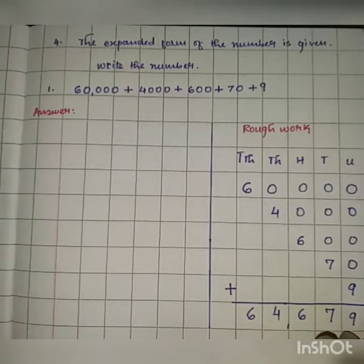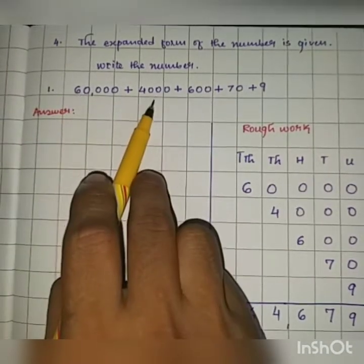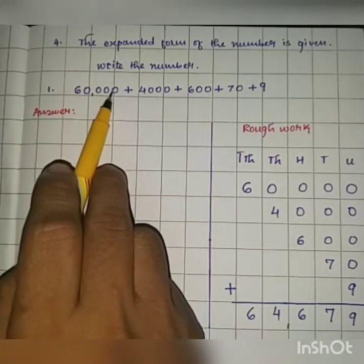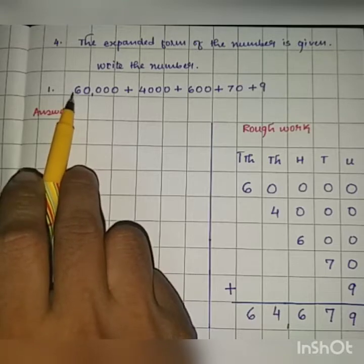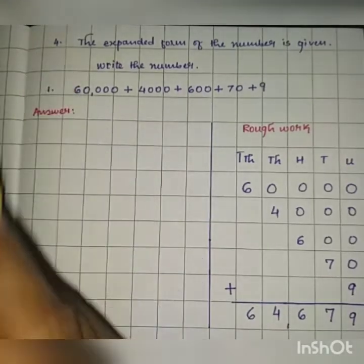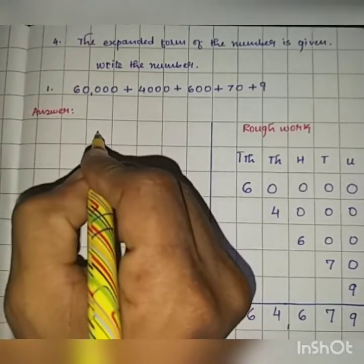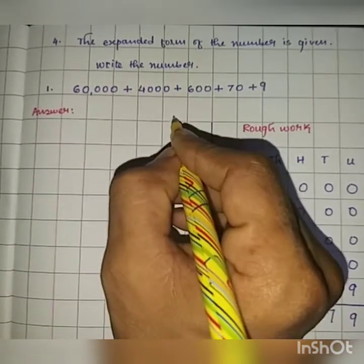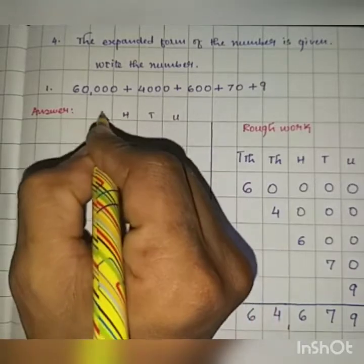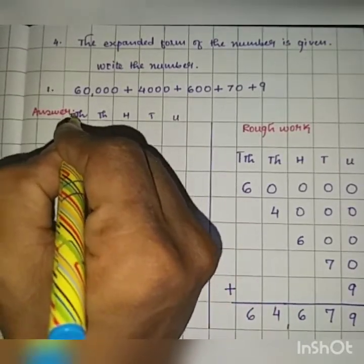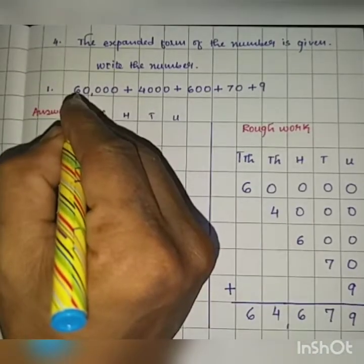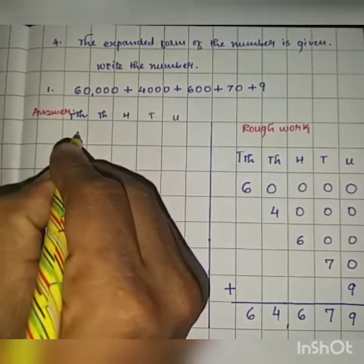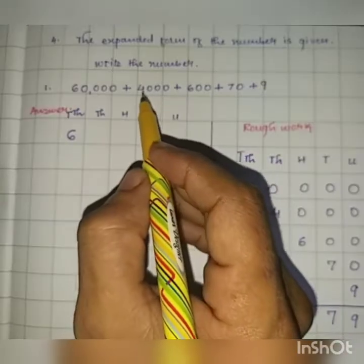Now let's look at another way to solve this. Looking at sixty thousand plus four thousand plus six hundred plus seventy plus nine, the largest number is sixty thousand, where six is in the ten thousands place. So this is a five-digit number. We set up our place value columns: units, tens, hundreds, thousands, and ten thousands. Six is written in the ten thousands place.